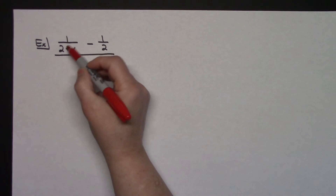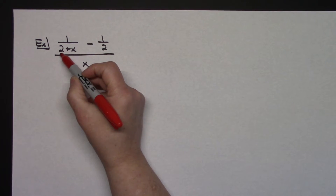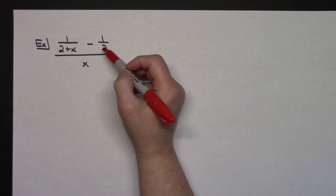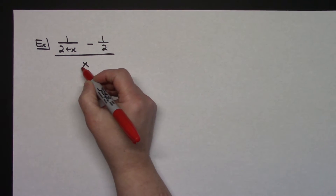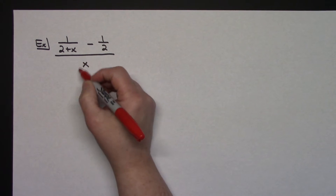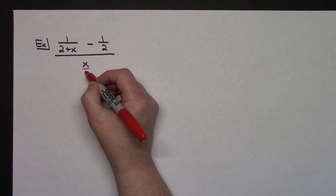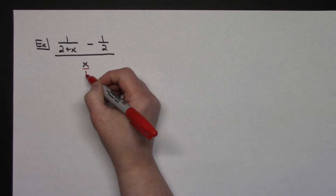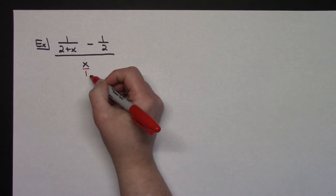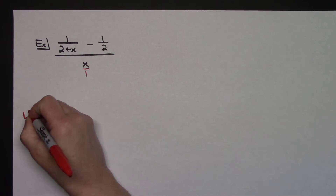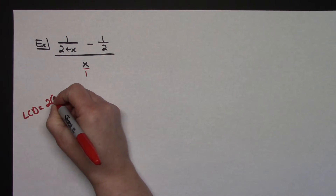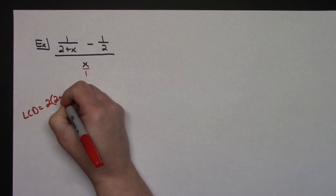Here I have a fraction and the denominator is 2 plus x. Here I've got a fraction and my denominator is 2. The number one mistake is some people want to throw an x in there, but you've got to think of this as x over 1 — that denominator is 1, so I don't have to deal with this at all. On this one, the least common denominator turns out to be 2 times 2 plus x.